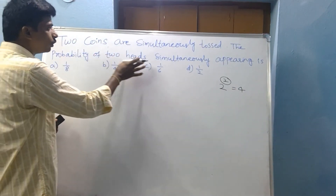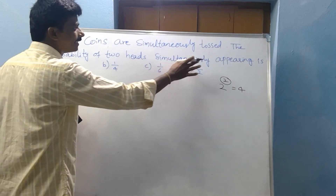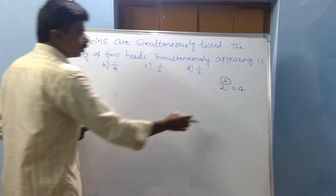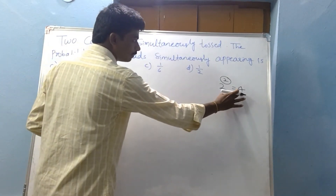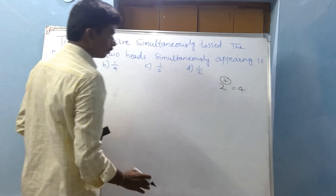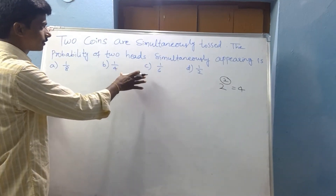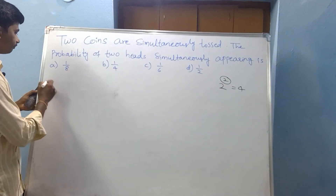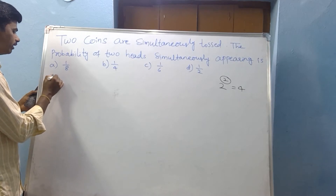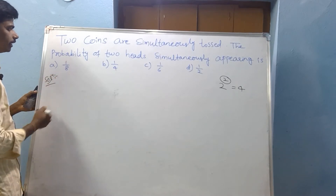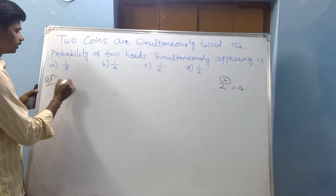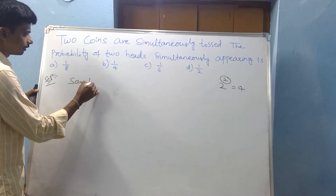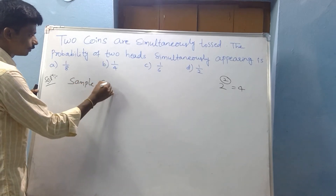Probability of two heads simultaneously appearing. Total sample space is 4. This question has already been asked in the GATE exam. The sample space equals: Head-Head, Head-Tail, Tail-Head, Tail-Tail.